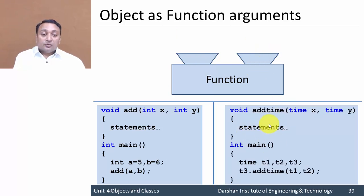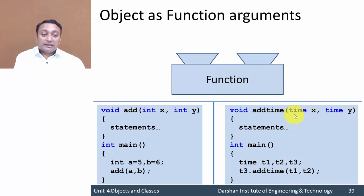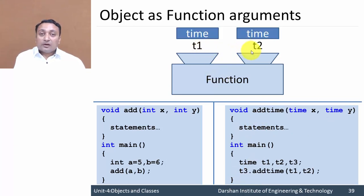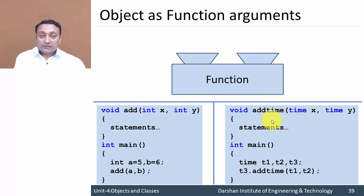Now suppose if we want to pass t1 and t2, which are both objects of type time. So in the function definition we are supposed to write another object of class time. So here another object is time x and time y. t1 will be copied to x, t2 will be copied to y, statements will be performed, and control will revert back to the calling function. So t1 and t2, both of type time, will be taken as function arguments and processed.